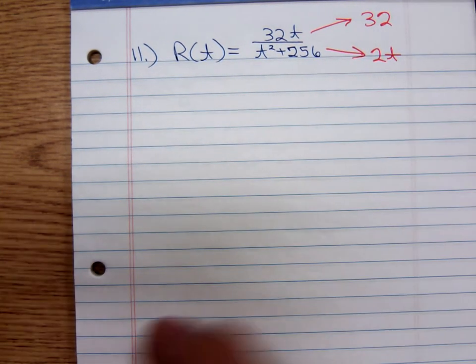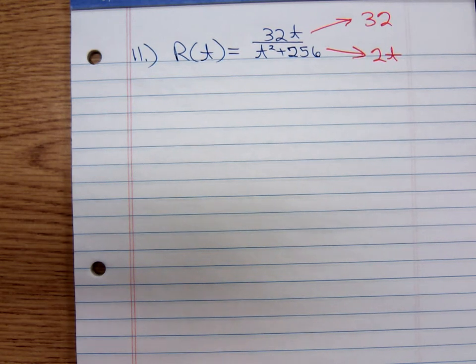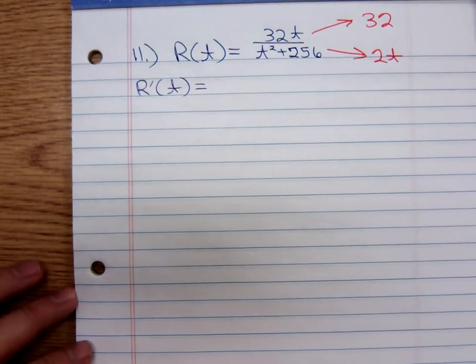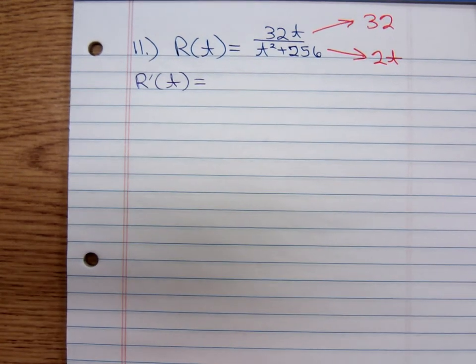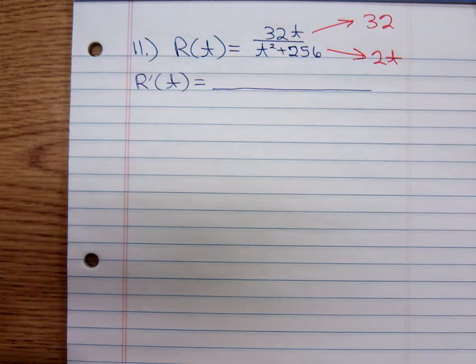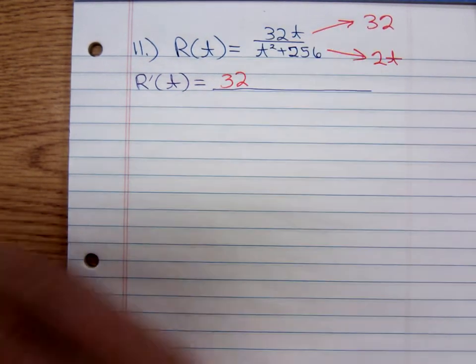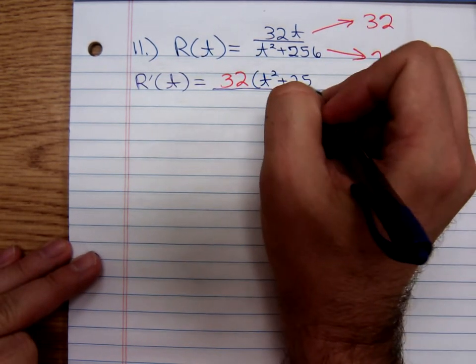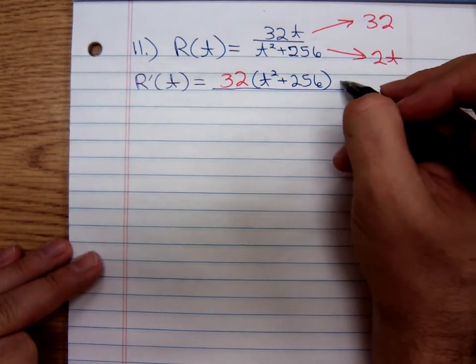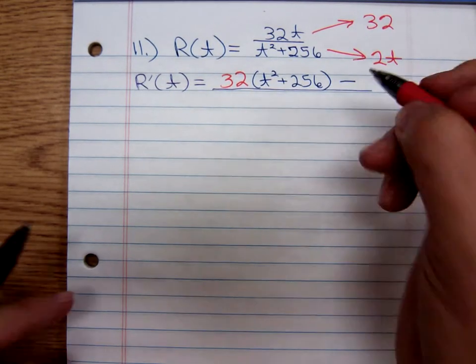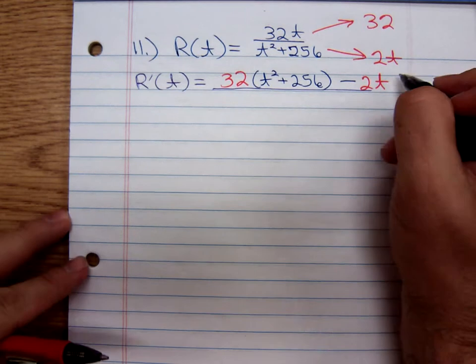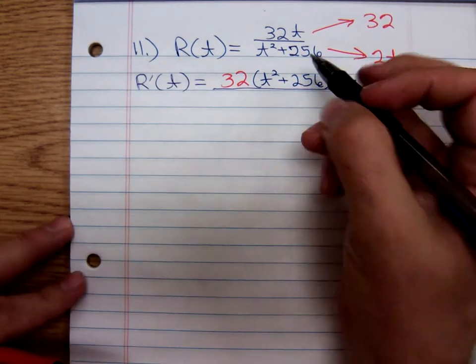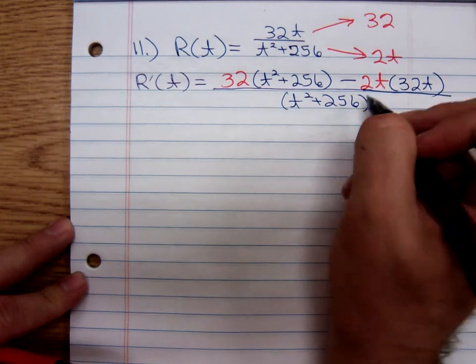So finding the derivative, R'(t)—I'll draw my fraction bar—it's the derivative of the numerator times the denominator, the original denominator which is t² + 256, minus the derivative of the denominator times the 32t, all over (t² + 256) quantity squared.